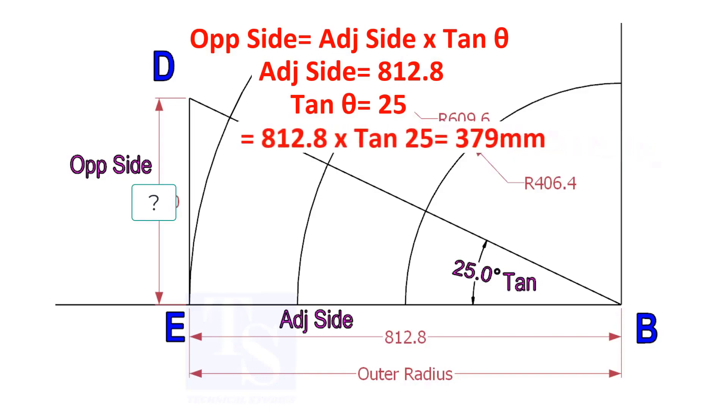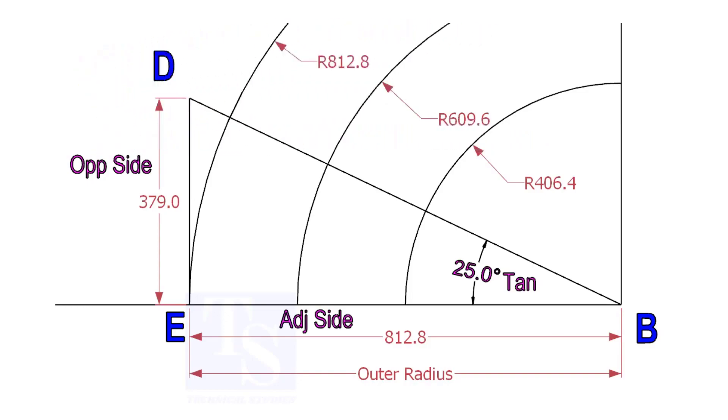812.8 into tan 25 equals 379 millimeters. Draw the line ED vertically and the slant line DB. I hope now you will be able to draw a line in any degree.